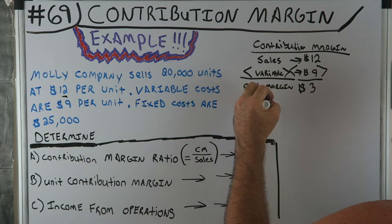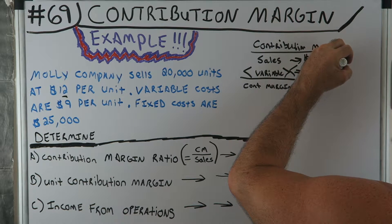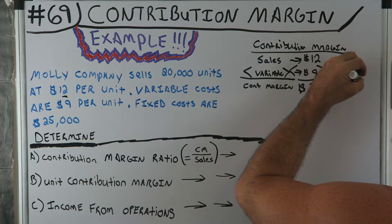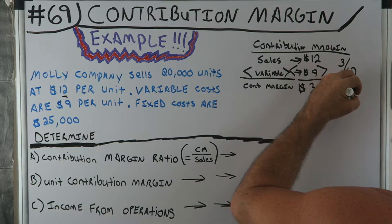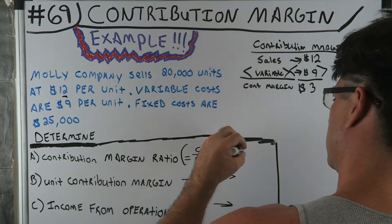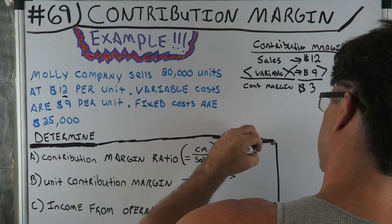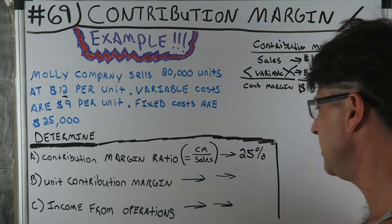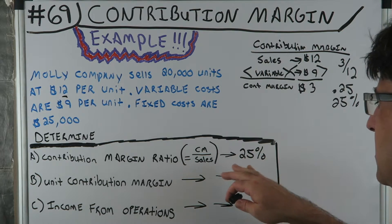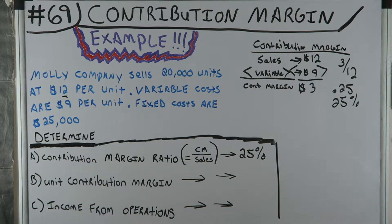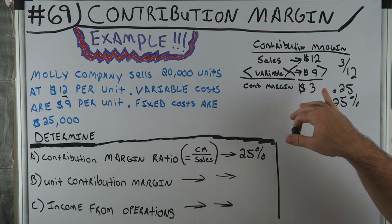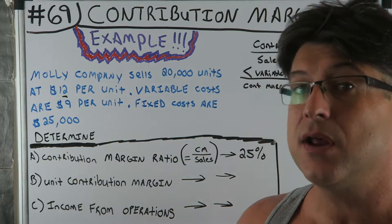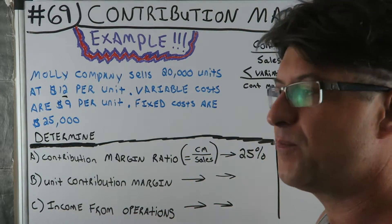Contribution margin over sales: that's $3 over $12. Three divided by 12 is 0.25, or 25%. So the contribution margin ratio is 25%.